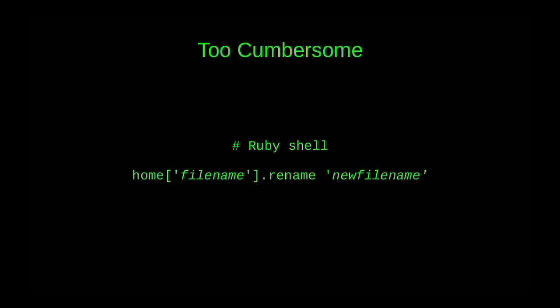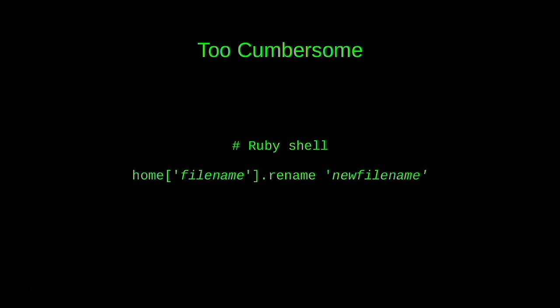There's a Ruby shell whose syntax is kind of particularly bad. When you're coming from the point of view of that language, you think: I'm in Ruby, I have dictionaries, maybe I could make the file system look like a dictionary — home would be my home directory, and I'd have a method called rename. You can see how you'd get there. But compared to what you'd write in a Unix shell, it's really hard to see why you would want that.